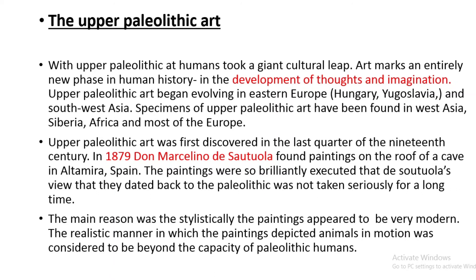Upper Paleolithic art was first discovered in the last quarter of the 19th century. In 1879, Don Marcelino found paintings on the roof of a cave in Altamira, Spain. The paintings were so brilliantly executed that the view that they dated back to the Paleolithic was not taken seriously for a long time. The main reason was that stylistically the paintings appeared very modern — the realistic manner in which animals in motion were depicted was considered beyond the capacity of Paleolithic humans.